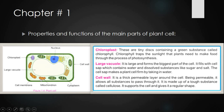Chloroplasts are tiny discs containing a green substance called chlorophyll. These disc-like structures inside the cell contain a green substance called chlorophyll. Chlorophyll traps the sunlight that plants need to make food through the process of photosynthesis. The chlorophyll traps sunlight, which helps the plant carry out the process of photosynthesis. We will study photosynthesis in detail in upcoming videos.